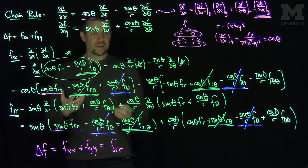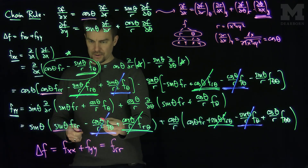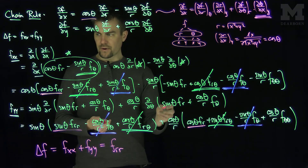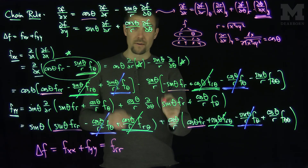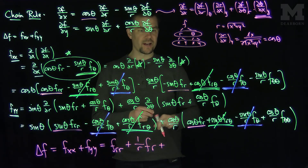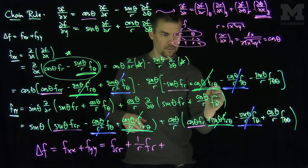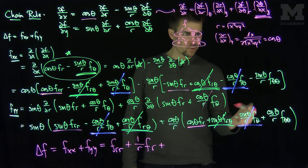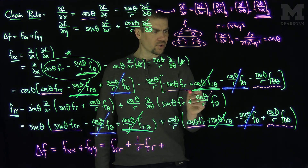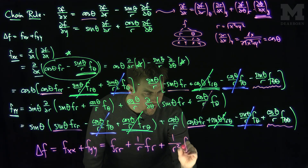Looking at the coefficient of fr: from fyy we get cos²θ/r and from fxx we get sin²θ/r. Adding these gives (cos²θ + sin²θ)/r = 1/r, so the fr term is (1/r)·fr. Finally, the fθθ terms: sin²θ/r² from one and cos²θ/r² from the other, summing to 1/r²·fθθ. So the Laplacian in polar coordinates is frr + (1/r)·fr + (1/r²)·fθθ.